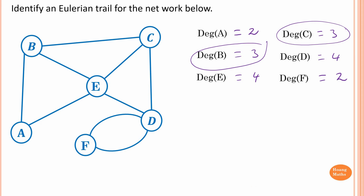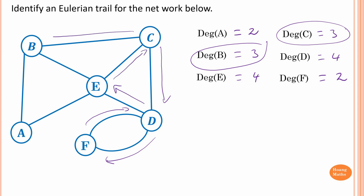There are multiple valid answers — your answer may differ from mine. One solution: I start from C, I go to D. From D I go to F. F to D. D to E. E to C. From C I go to B. From B I go to E. From E I go to I. And from I I go to B. So I start at C and end at B — different vertices — and I pass through every edge once. So this is an Eulerian trail.